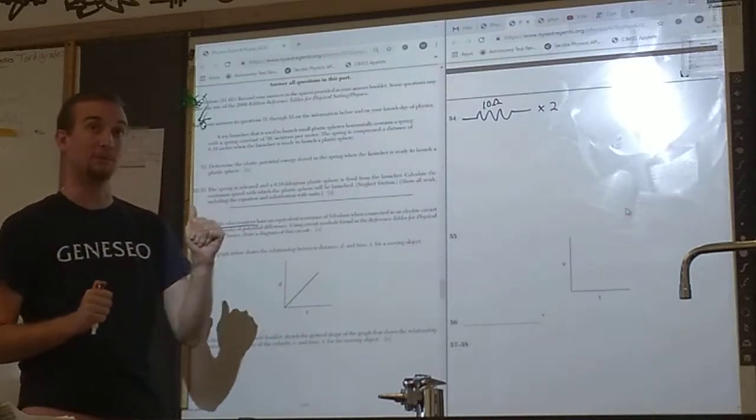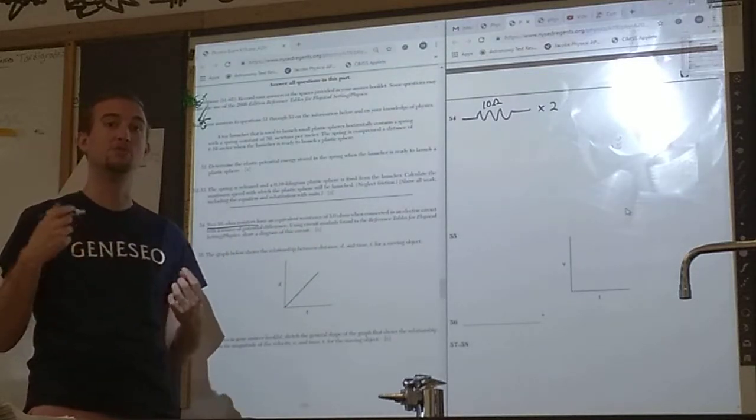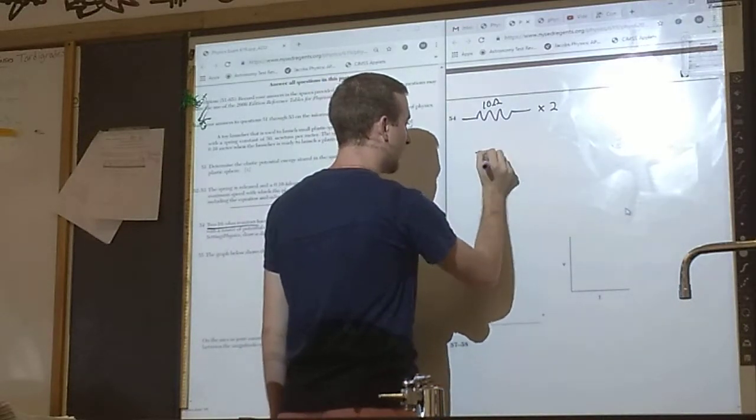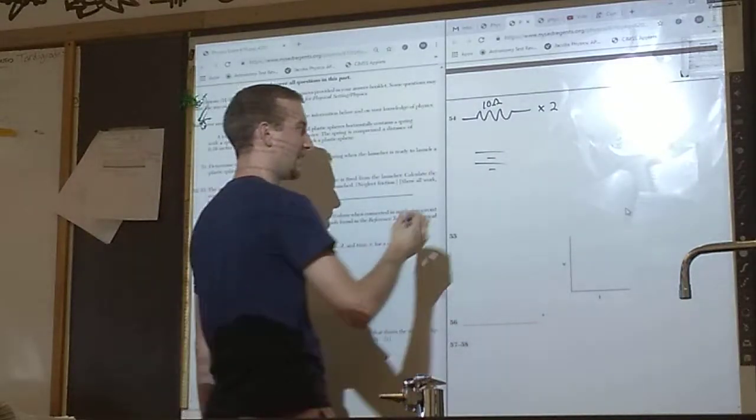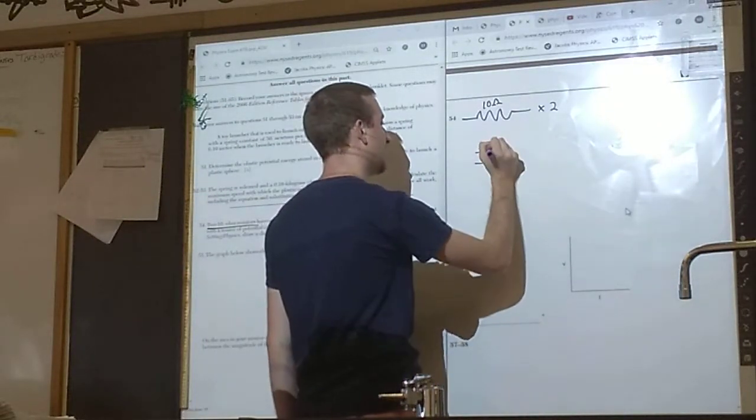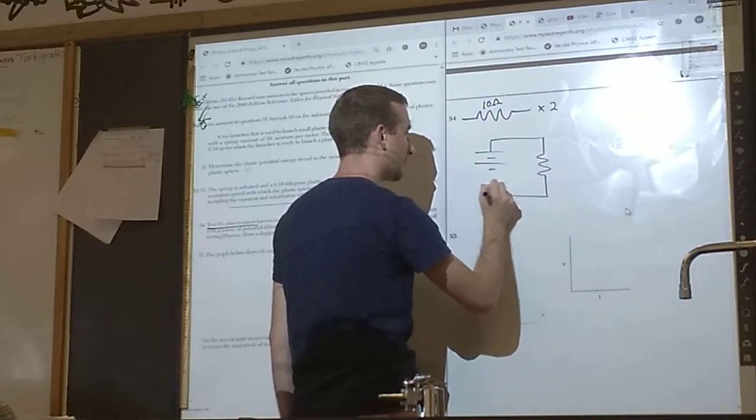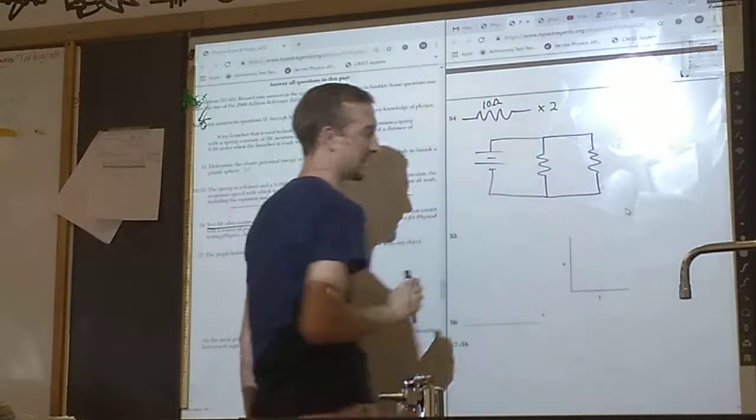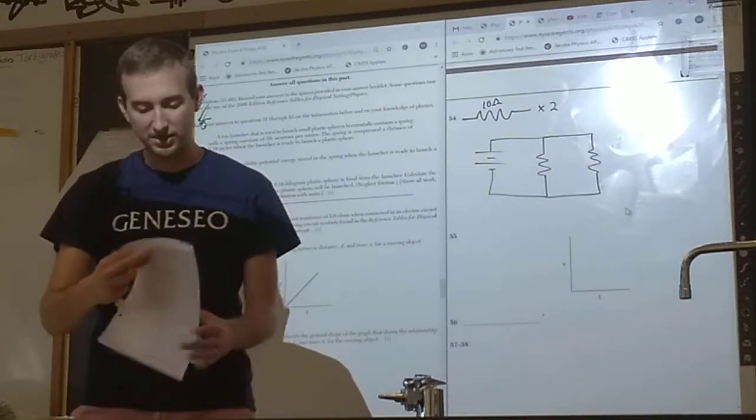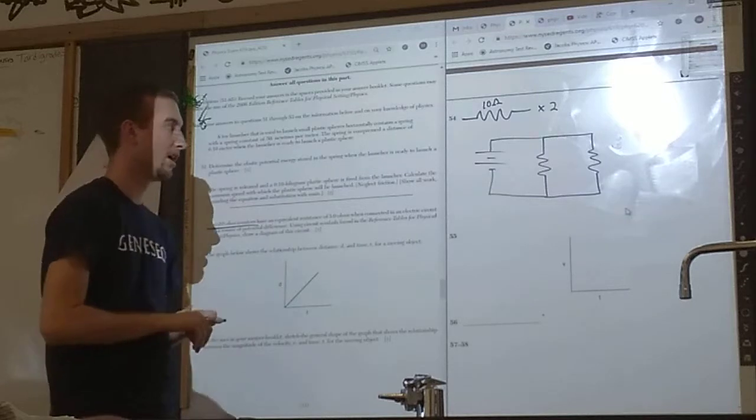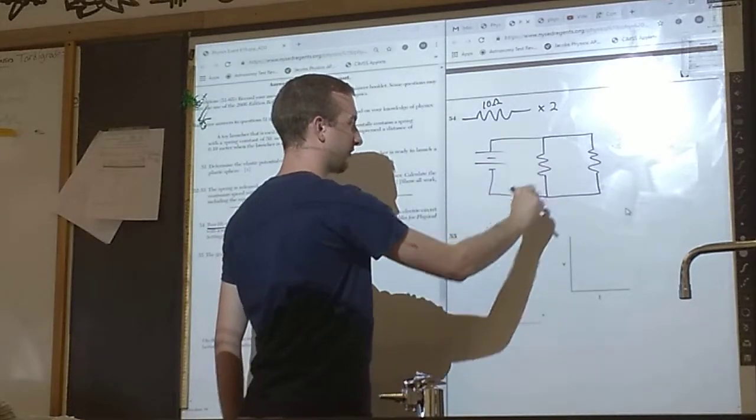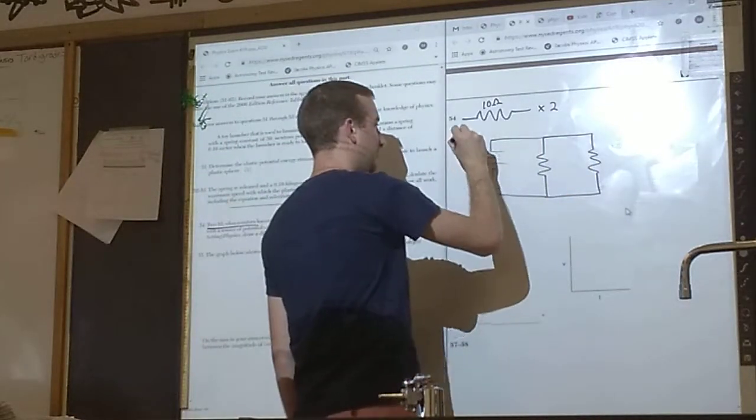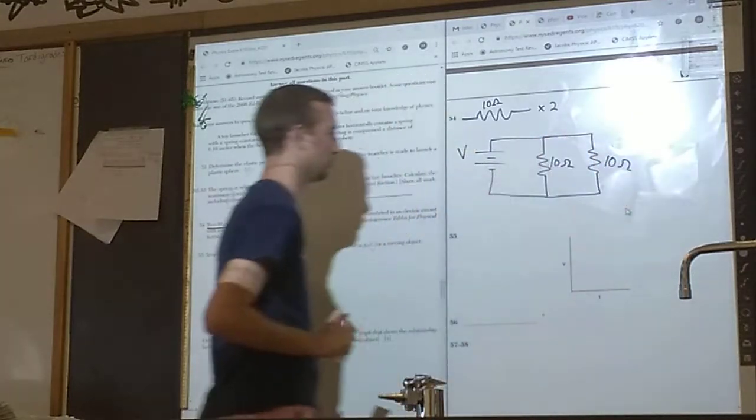This question is trying to get you to draw a parallel circuit. Every circuit, no matter if it's series, parallel, or something else, needs three things. First thing is a source of potential difference, a power source, an energy source. I have chosen to draw a battery here. There's my first resistor. Parallel circuit means there are two paths for the current to go through. There's my second resistor. I could have drawn this in any number of ways, as long as there are two different paths. I have one path for current to flow this way and another path for current to flow this way.